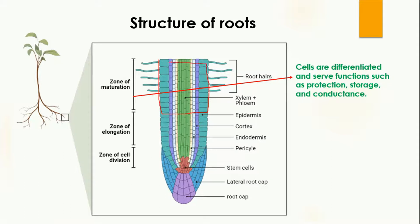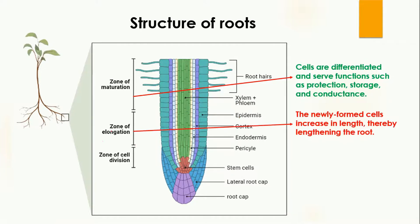The cells present in the zone of maturation are differentiated, meaning that every cell knows its purpose and what it is going to do. They serve their functions such as protection, storage, and conductance.